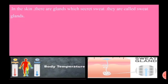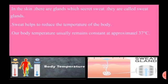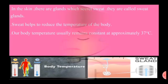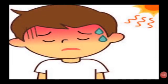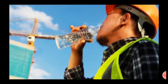In the skin there are glands that secrete sweat, called sweat glands. Sweat helps to reduce the temperature of the body. Our body temperature usually remains constant at approximately 37 degrees Celsius. When we walk or play in the hot sun, we get tired and our skin becomes wet due to sweat. After hard physical labor the temperature of our body rises, then sweat is released to help reduce the body temperature.